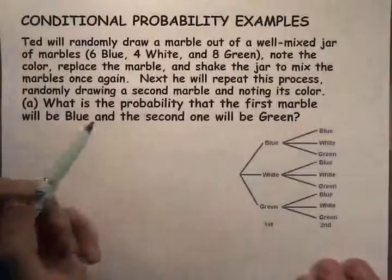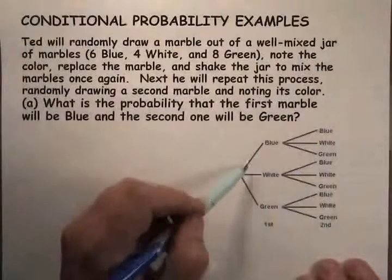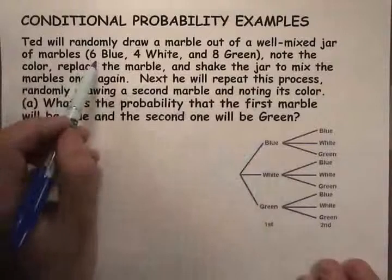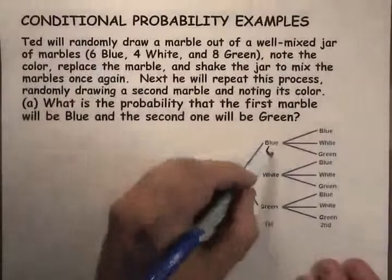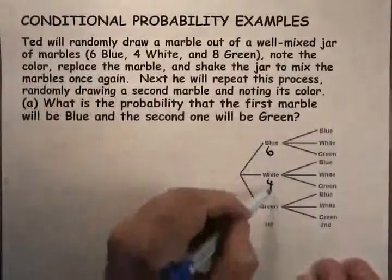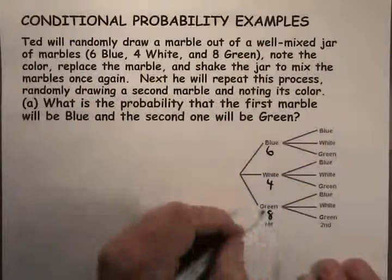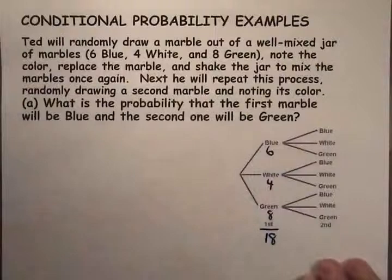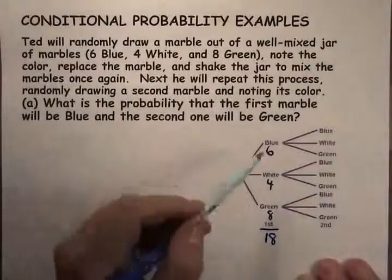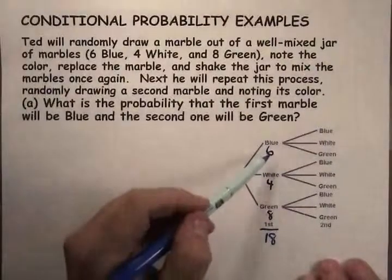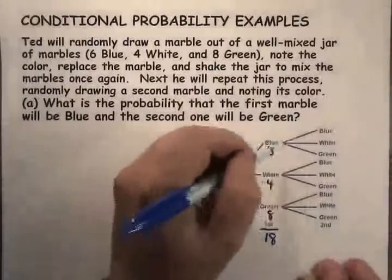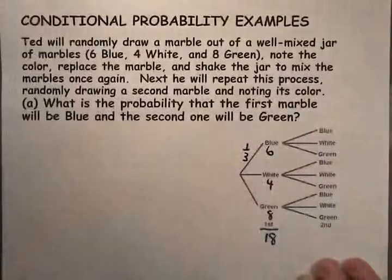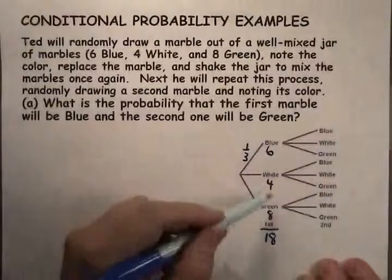I'm not going to do them all because we don't need them all. For instance, what would be the probability of going on the first draw and getting a blue? There are six blues, four whites, and eight greens. If you add those up, that's 18. So on the first draw, Ted has a probability of six eighteenths, which is one-third, of getting a blue.